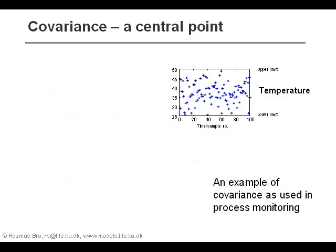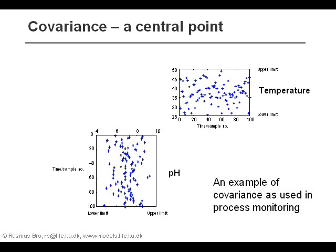Another example of how this principle is used is in process monitoring. Here we have a variable measured at different times — the temperature — and we can see that it varies between 25 and 50 degrees. That's the normal range for this process, and as long as all measurements are within those limits, the process is said to be in control. We might have another measurement, for example the pH value, and just as for the temperature, we can see that there is a certain level of normal variation. So for both of these variables, we would say the process is in control.